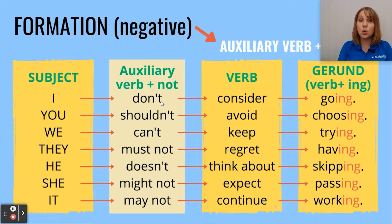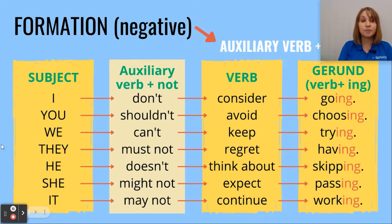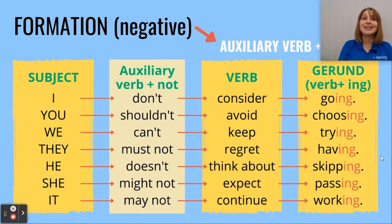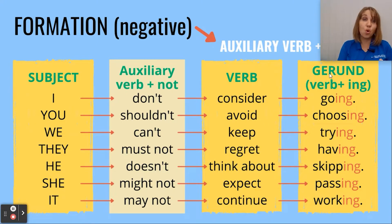Here are examples of the negative gerund form: 'I don't consider going.' 'You shouldn't avoid choosing.' 'We can't keep trying.' 'They must not regret having.' 'He doesn't think about skipping.' 'She might not expect passing.' 'It may not continue working.' As long as you stick to the parts that constitute the sentence, you won't make a mistake.